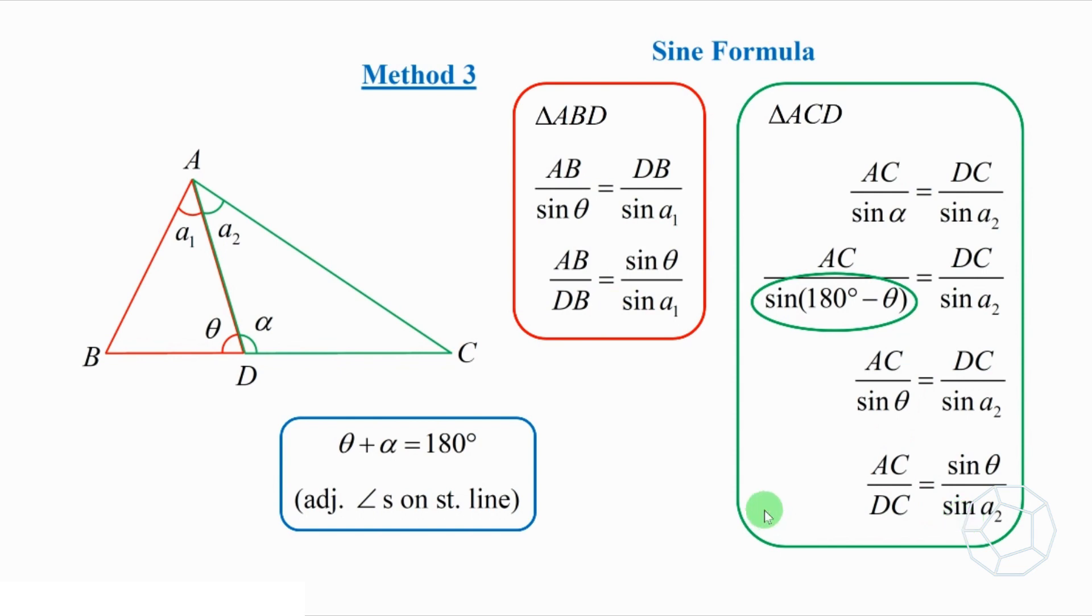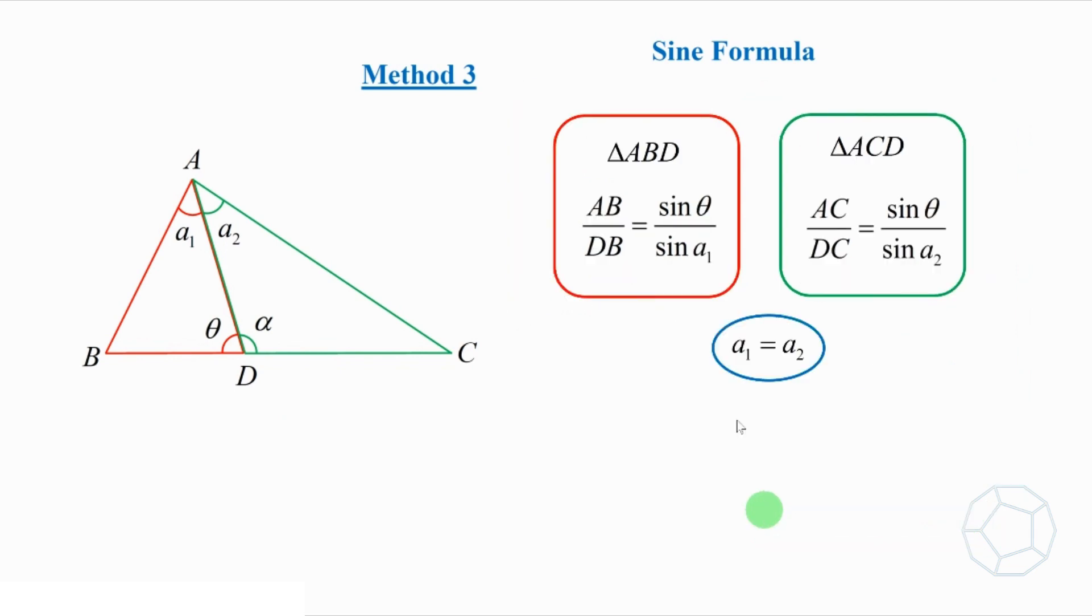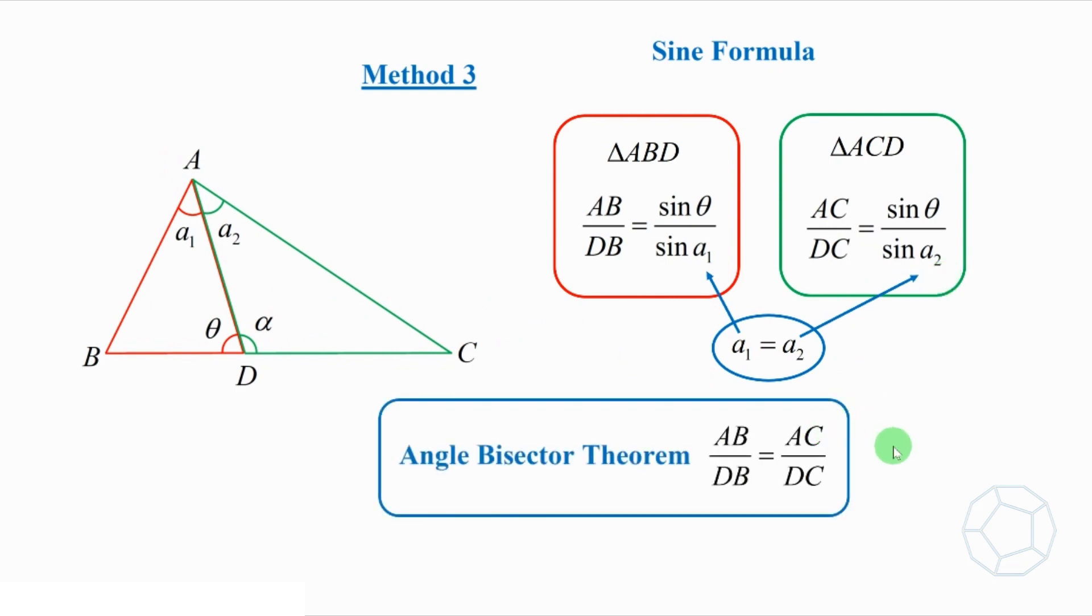Then, what's next? Let's make use of A1 equals to A2 again from the angle bisector AD. Therefore, the two fractions are equal. Put them together, the third proof of the theorem is also completed. The ratio of AB and DB is equal to the ratio of AC and DC.